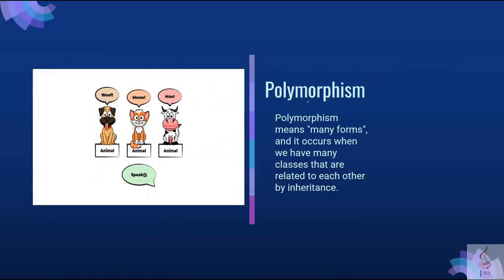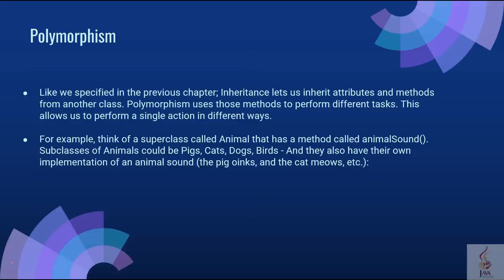Now let's go to the polymorphism concept. Polymorphism means many forms. It occurs when we have many classes that are related to each other by inheritance. Like we specified in the previous chapter, inheritance lets us inherit attributes and methods from another class. Polymorphism uses those methods to perform different tasks, allowing us to perform a single action in different ways. For example, think of a superclass called Animal that has a method called animal sound. Subclasses of Animal could be pigs, cats and dogs, and they also have their own implementation of an animal sound.